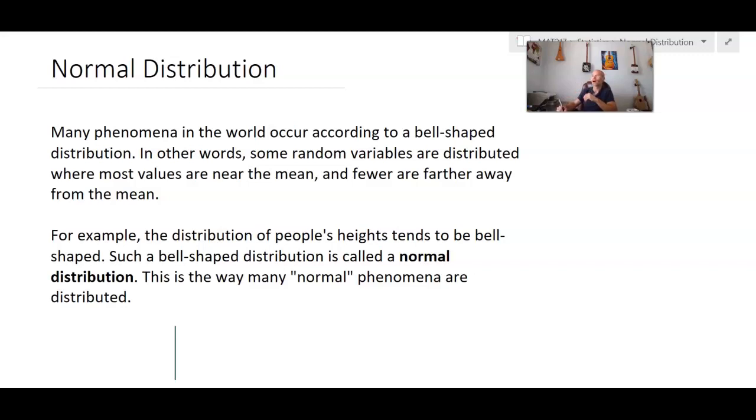...that random variable, if it tends to be the case that most of the values that occur in that distribution are near the mean and fewer are farther away, then you get what's called a normal distribution.